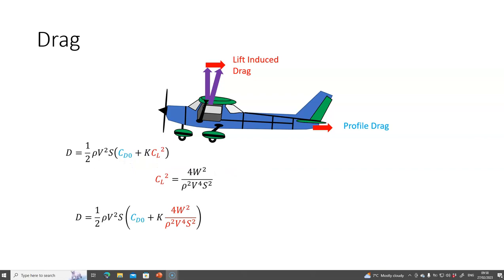I'm going to take this equation and substitute it in for CL squared. When I do that and multiply it out, the half rho v squared S all cancel off, and that is my expression for drag.